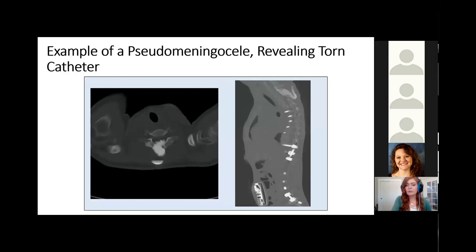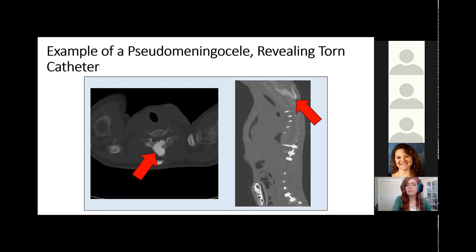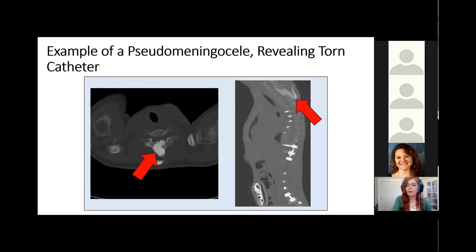This would be an example of a patient who had a pseudomeningocele or a CSF leak. Here you can see there's no hyperdense semilunar shape; instead, the dye is escaping into the posterior back tissues, as seen again in the sagittal CT. This is a very obvious CSF leak — they're not usually this obvious — but in this case the patient would have required a catheter revision.